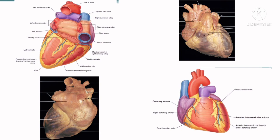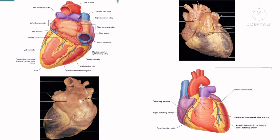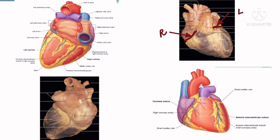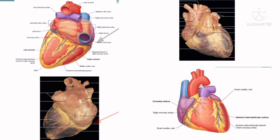Demarcation of the chambers of the heart on the surface is by three sulci or grooves. Number one is the coronary sulcus or atrioventricular groove, which encircles the heart and separates the atria from the ventricles. Anteriorly it is deficient due to the root of the pulmonary trunk. The AV groove is divided into anterior and posterior parts. The right half of the anterior part lodges the right coronary artery, while the left half intervenes between the left auricle and left ventricle and lodges the circumflex branch of the left coronary artery. The posterior part of the AV groove intervenes between the base and the diaphragmatic surface and lodges the coronary sinus.